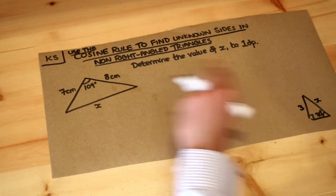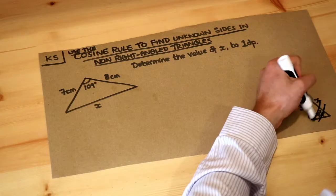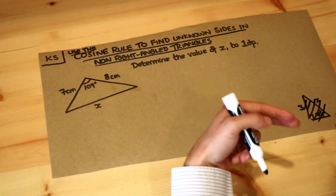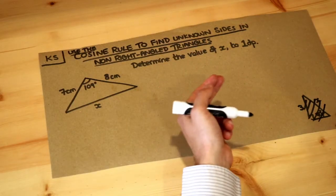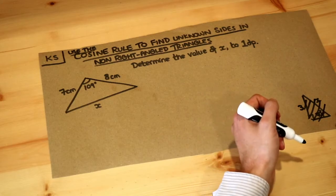However, that only works for right-angle triangles. We've got a non-right-angle triangle, and basically for non-right-angle triangles, if you want to find an unknown angle or an unknown side, we have to use either the sine rule or the cosine rule.